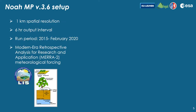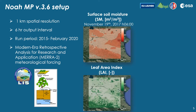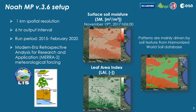Noah-MP was set up at 1 km spatial resolution using MERRA-2 as meteorological forcing input. Here are two maps of soil moisture and leaf area index simulations from Noah-MP, and we can see that the patterns are mainly driven by the soil texture from the Harmonized World Soil Database, which is an input for the model.